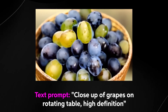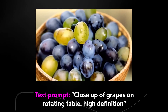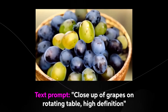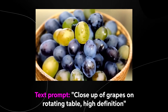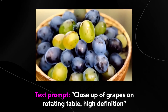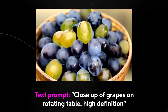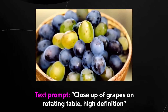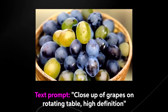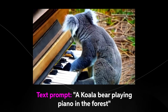This one I really do like — it's a close-up of grapes on a rotating table, high definition. It actually looks pretty decent. One thing I notice on a lot of these images is there's a little bit of grain which I'd like to see removed in upcoming versions, but I'm not going to lie, this one actually seems pretty decent based on the text prompt it was given.